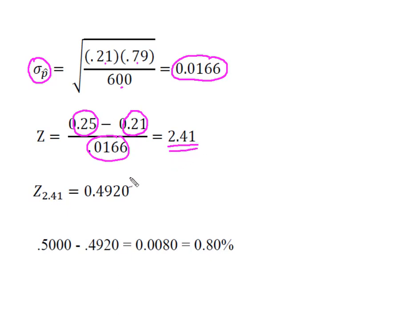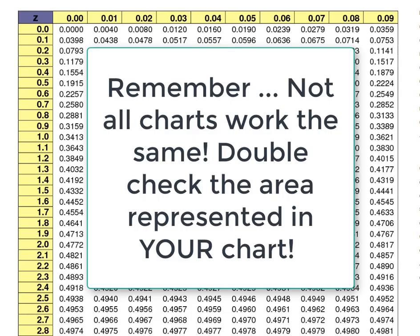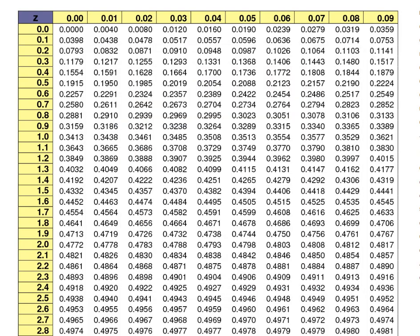And so what I need to find is I need to find the area associated with this 2.41 standard deviations above the mean. So I'm going to show you how I found it on my normal distribution chart. All right, my normal distribution chart represents the area from a point on the curve back to the center of the distribution.